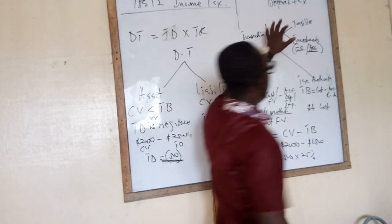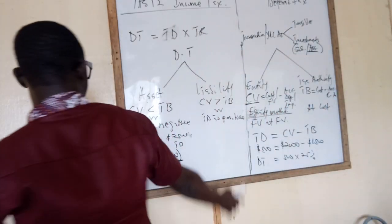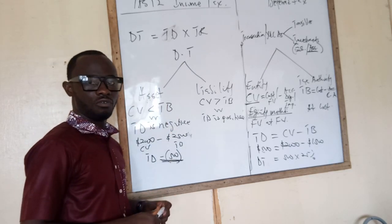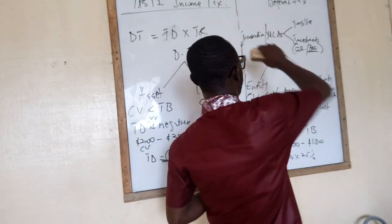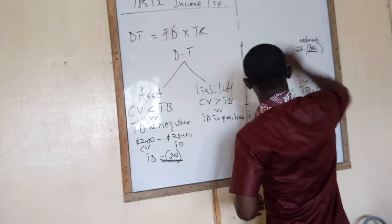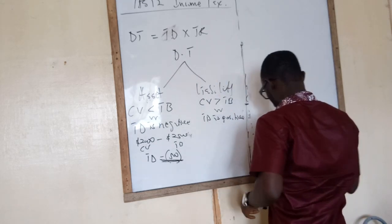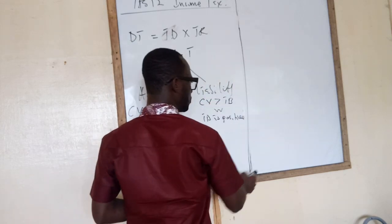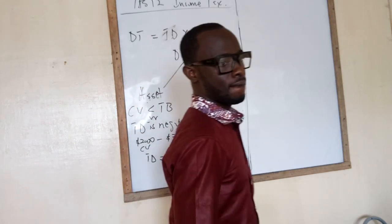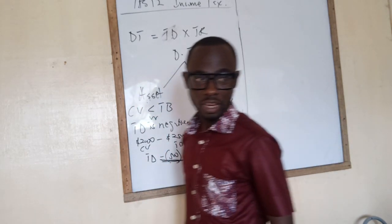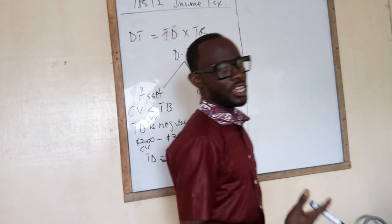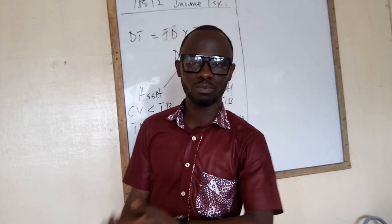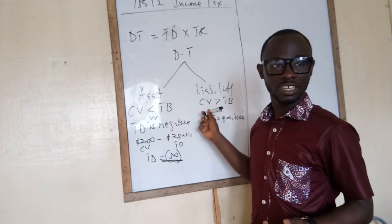That covers the issue relating to deferred tax. Now we need to look at the accounting treatment for deferred tax. If the temporary difference is given in the note, you take the tax rate, multiply it, and you get the deferred tax figure. But if the temporary difference is given, you have to find out if it is positive or negative so that you can determine whether it is a deferred tax asset or a deferred tax liability.